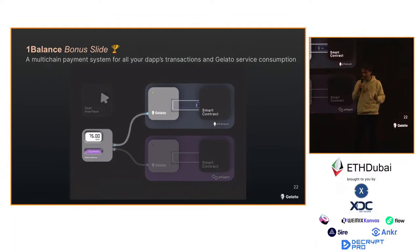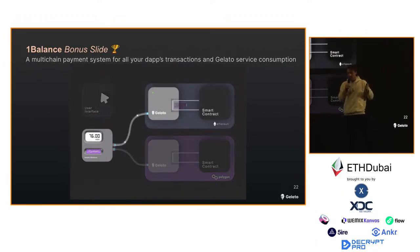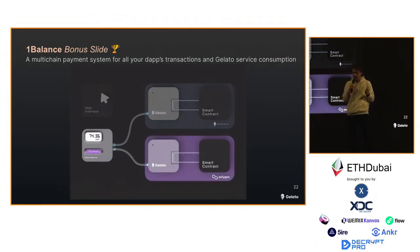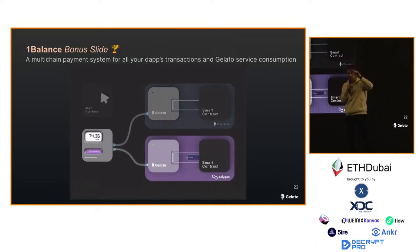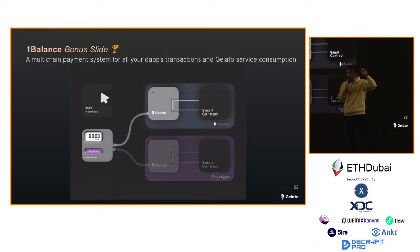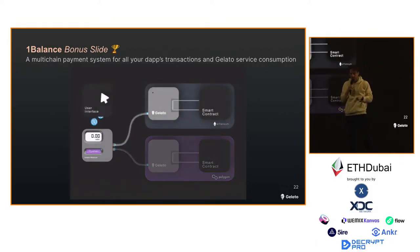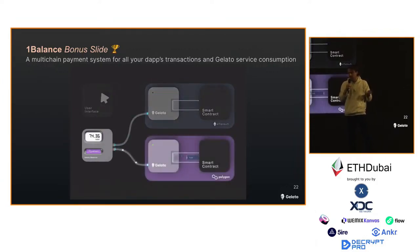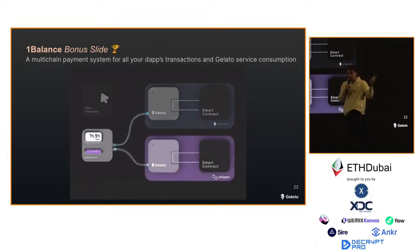One balance — bonus slides. A lot of pain usually when maintaining a multi-chain application is paying for gas and making sure you have the right currencies at all times. We built this One Balance system, a multi-chain payment system released last year. You simply deposit USDC on Polygon and now that USDC can be used to pay for all of your application's transactions on all chains. Gelato Relay will execute transactions for you on Ethereum, Polygon — your Web3 functions — all paid from a single balance no matter what you want to do across all chains. That really removes a lot of friction for developers.